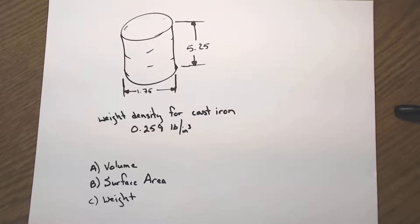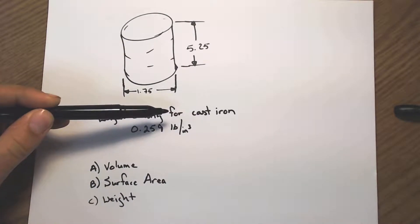Hey everybody, Mr. Hartzler here. I wanted to show you in this video how to find volume, surface area, and weight. This is going to be of a cylinder. In this case, it is a piece of cast iron rod.